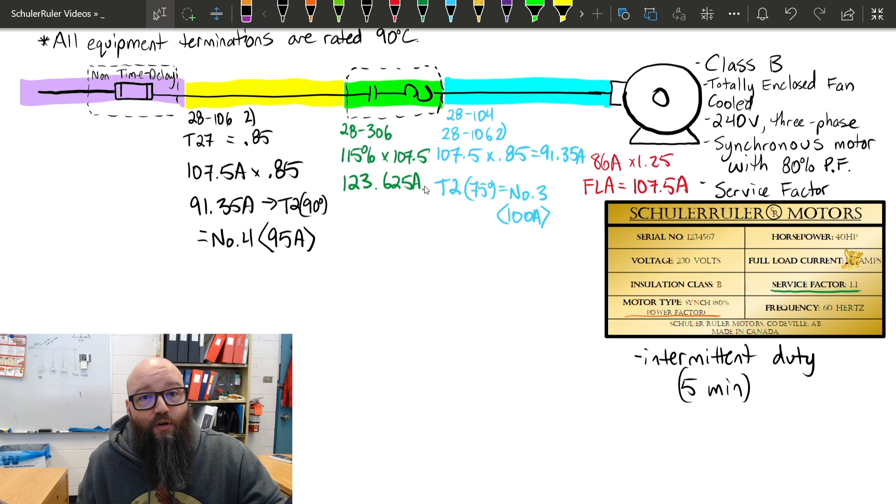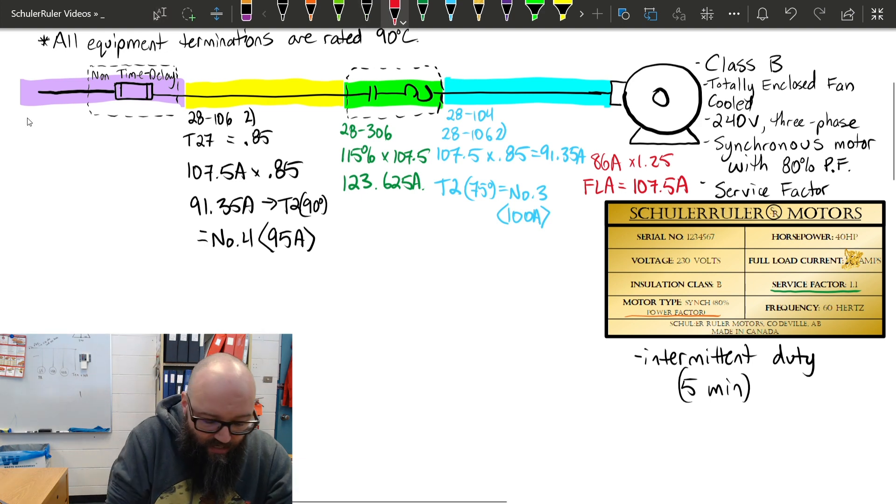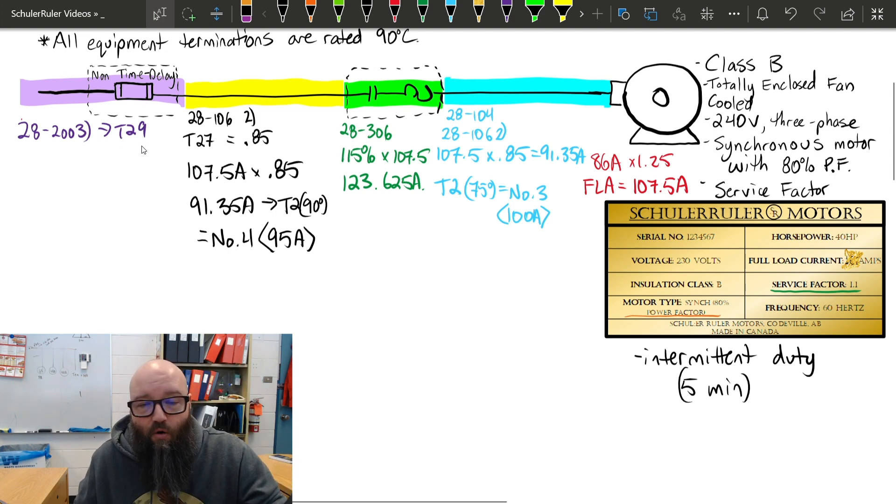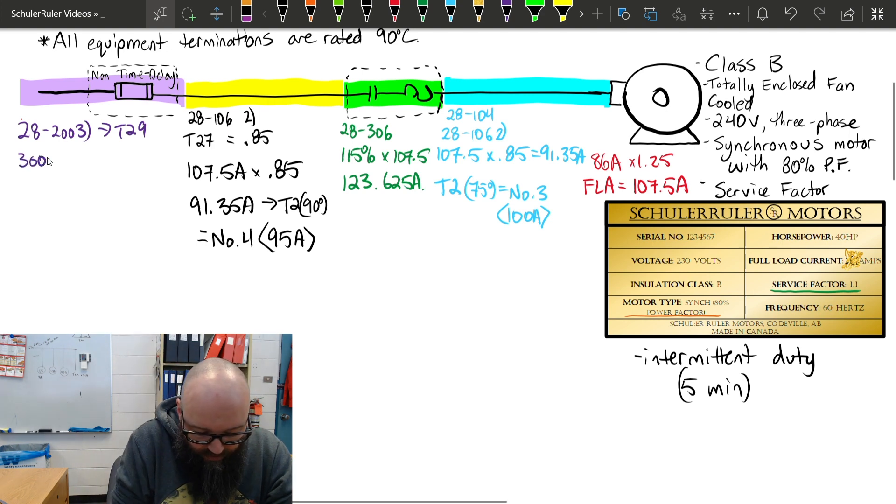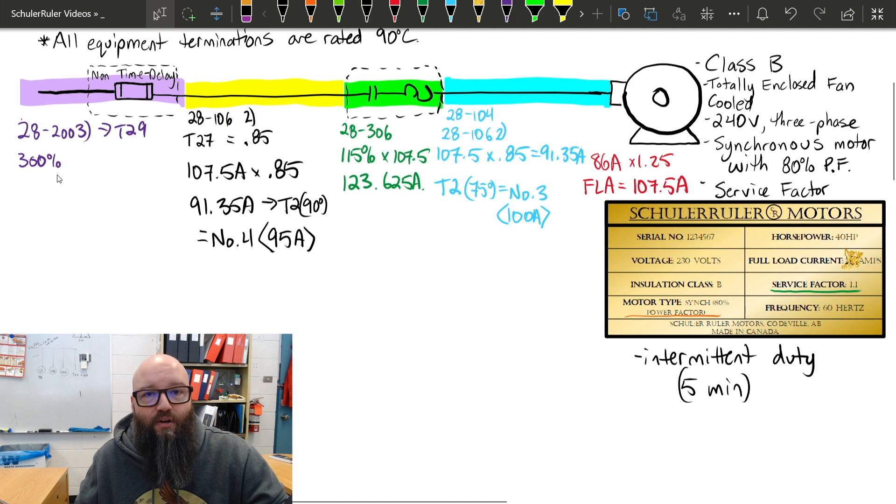Our overcurrent device. Again, nothing changes as far as the calculation. We're still going to refer to that 28200 subrule 3, which tells me go to table 29. You'll notice for synchronous motors it's under the same row as squirrel cage induction motors, but since we're using a non-time delay fuse in this example, we actually get a multiplier of 300%. It tells me in 28200 I cannot exceed that table 29 value multiplied by my FLA.